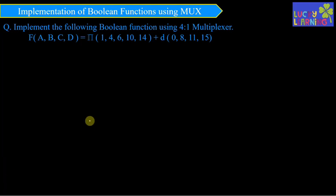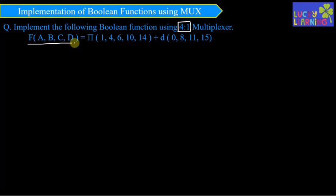Hello students. This question is asked by many students, so I thought of discussing it in detail. The question given is: implement the following Boolean function using a 4-to-1 multiplexer. The function F(A,B,C,D) is a four-variable function. With four variables, 16 min terms are possible, meaning it could be implemented using a 16-to-1 multiplexer, but we are asked to implement it using a 4-to-1 multiplexer.